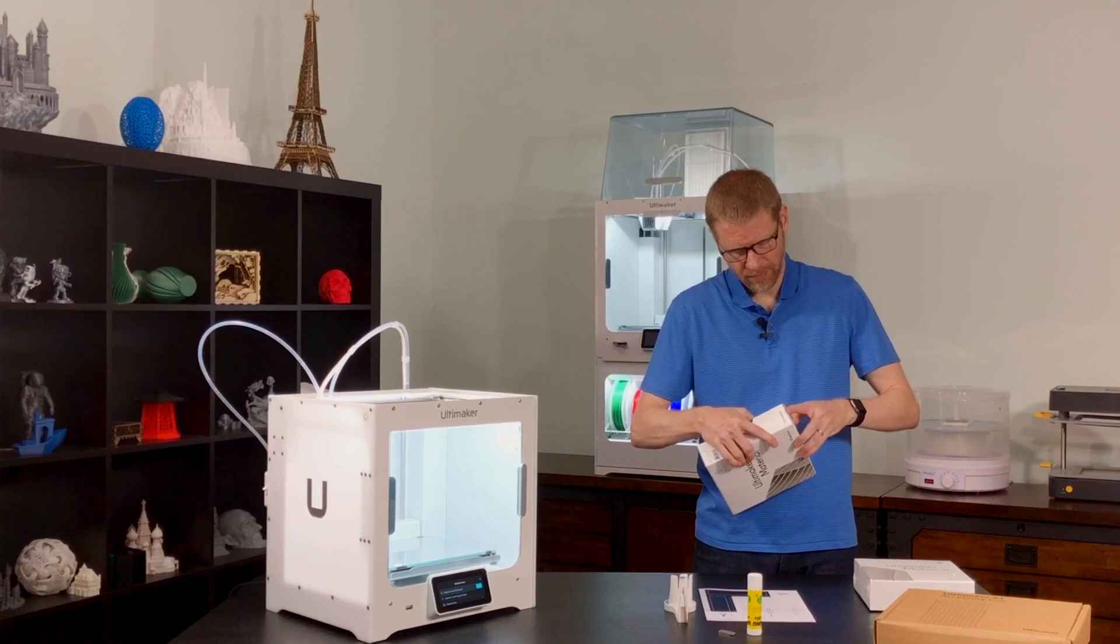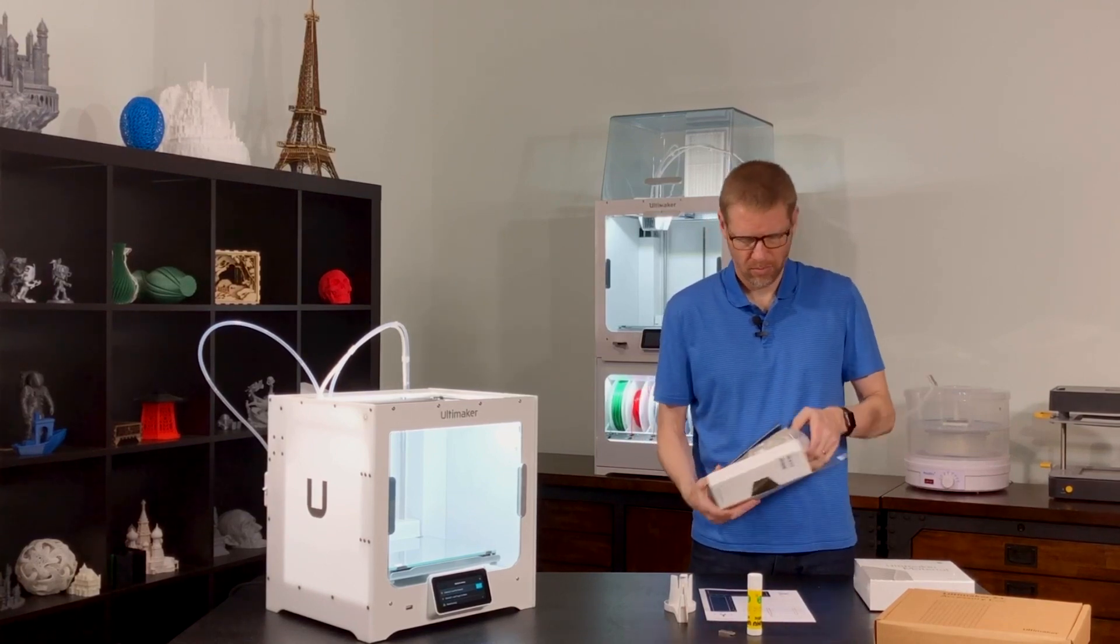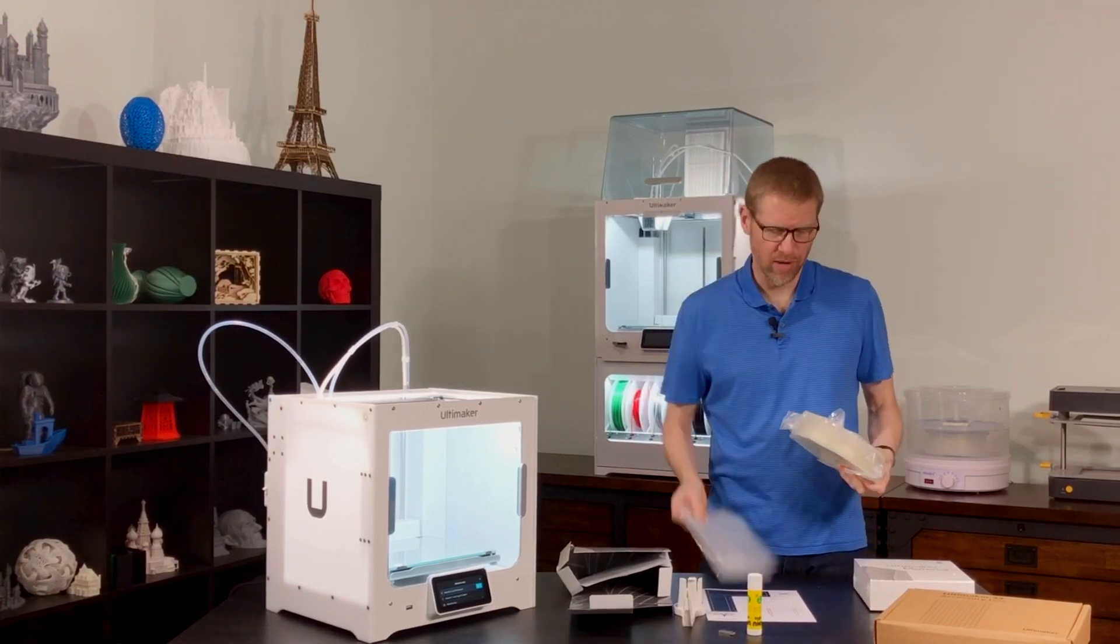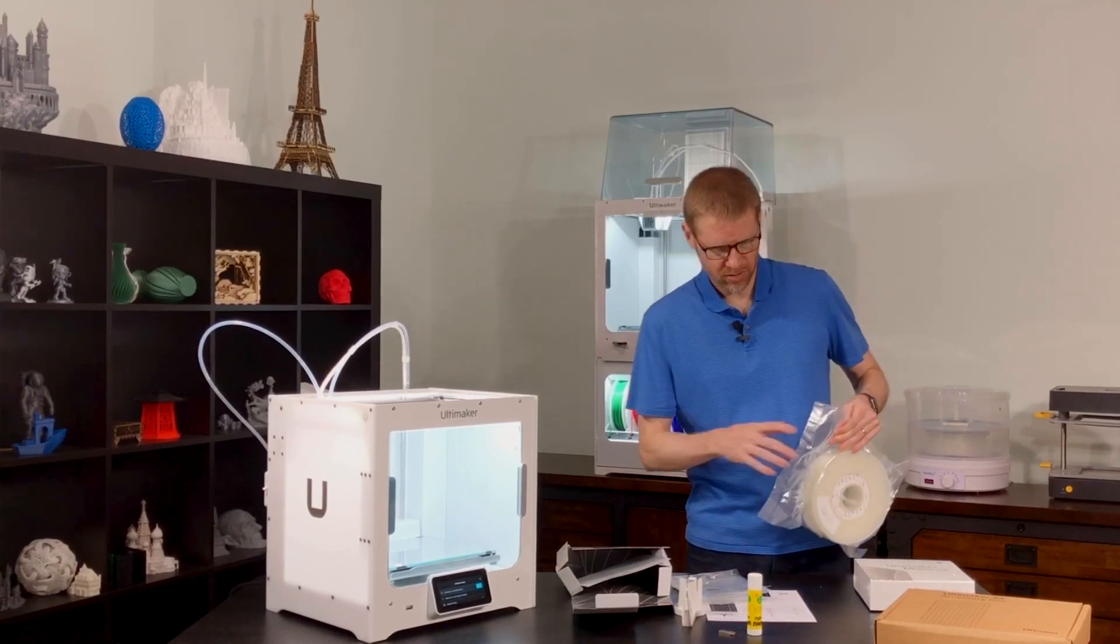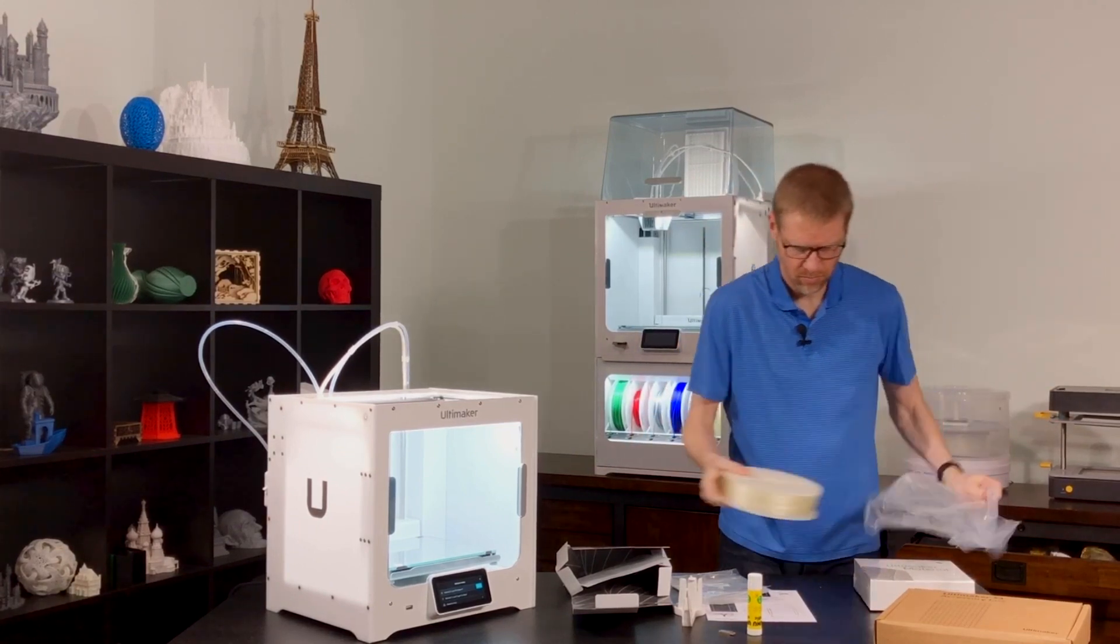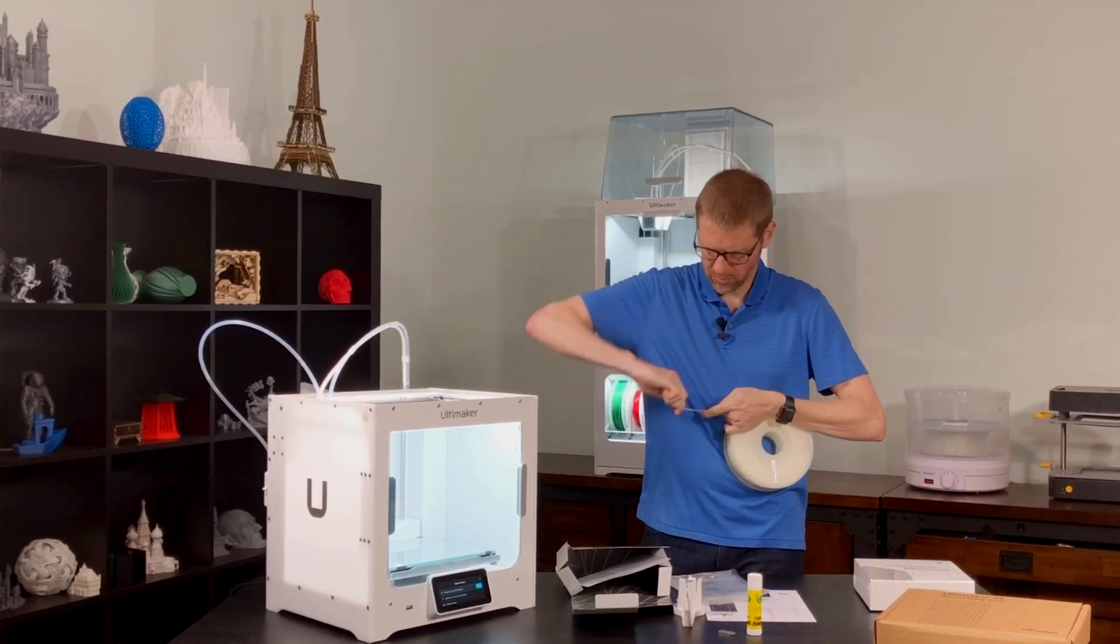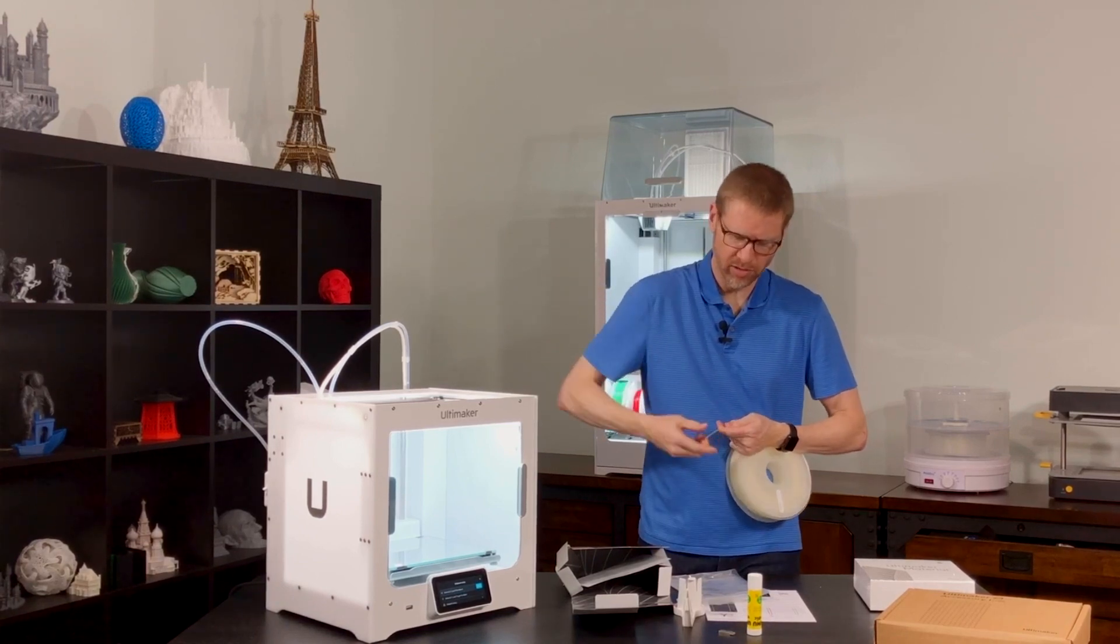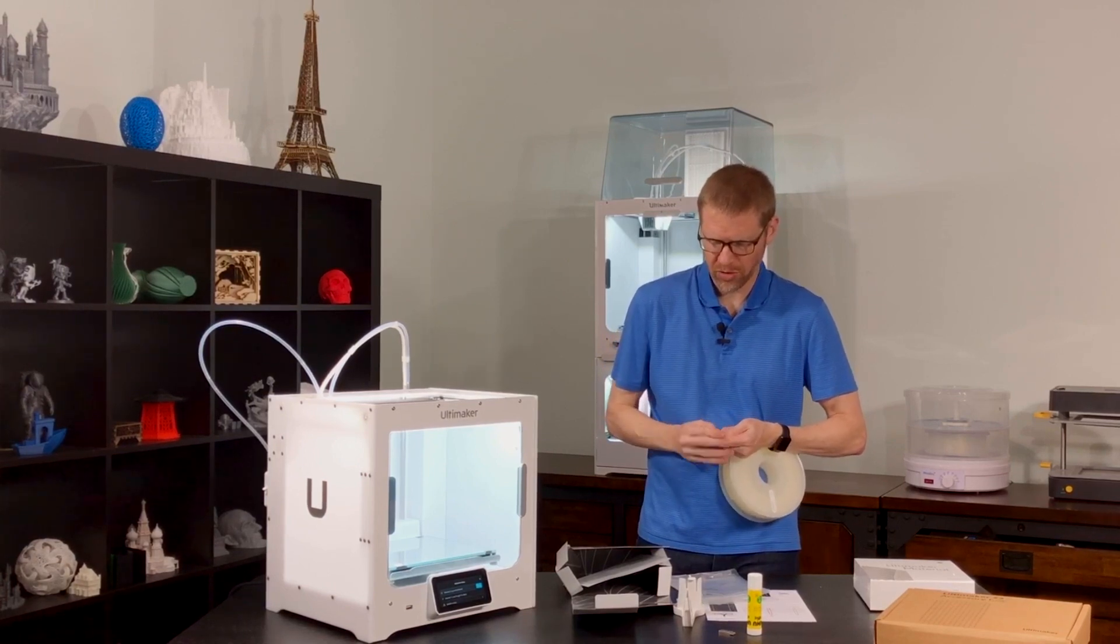So we're going to start with the PVA. They give you an extra bag for the PVA so you can keep it sealed, so that it doesn't pick up too much moisture. You always want to make sure to straighten out the end of your filament a little bit, because it can be curved when it comes off the spool, and it'll be easier to feed through when it's straightened out a bit.